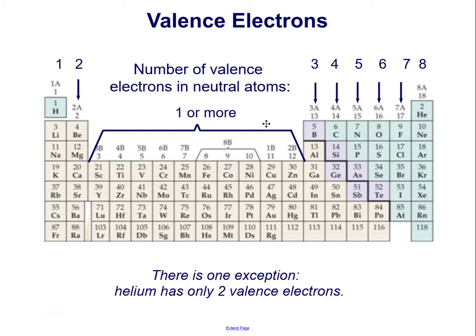They can have 1 or more valence electrons depending on what they are bonding with. There is one exception to this overall rule, and that's helium, which only has 2 valence electrons because 2 valence electrons gives it a full outer shell.